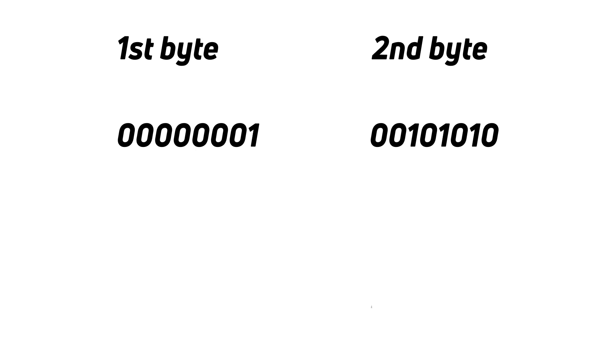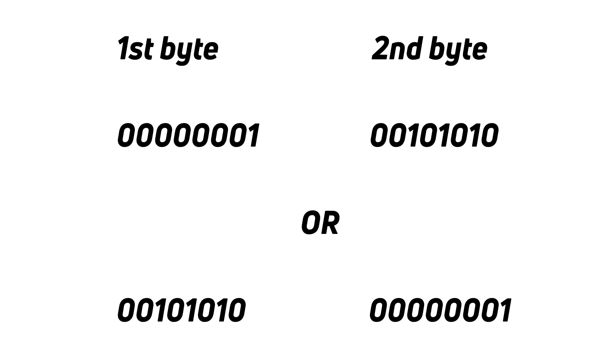Now the question is: how should these numbers be stored in memory? Should you store the one first and then the 42, or should you store the 42 first and then the one? There are some computers that store the one first and then the 42, and there are other computers that store the 42 first — which is 2A in hexadecimal — and then the one.